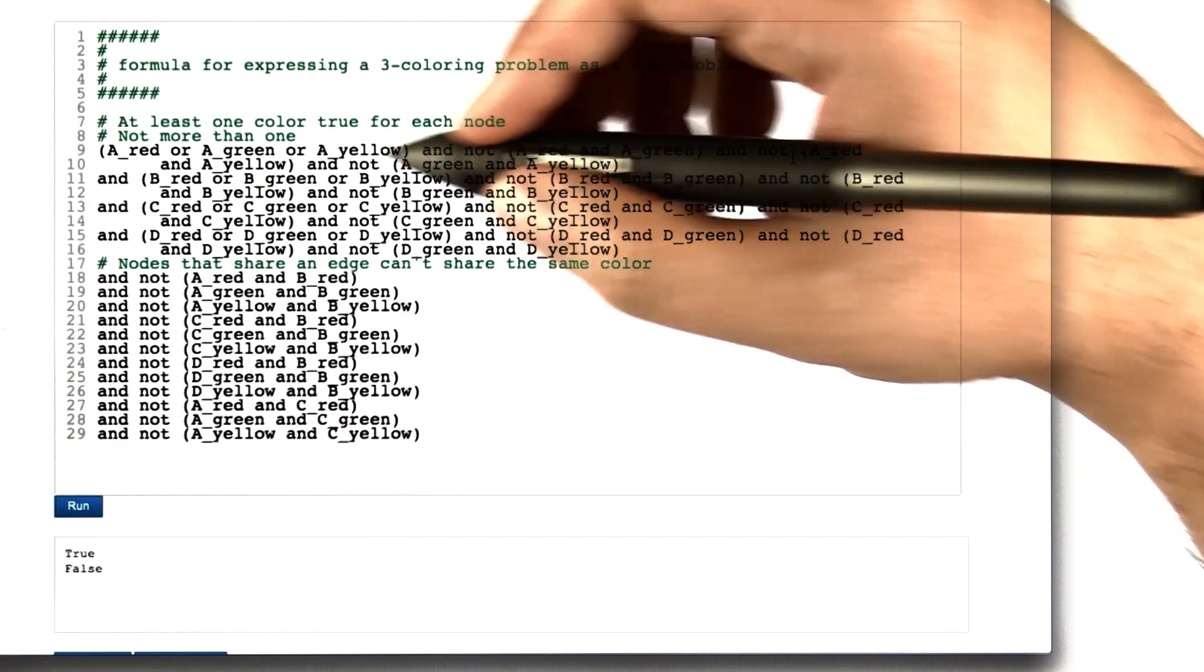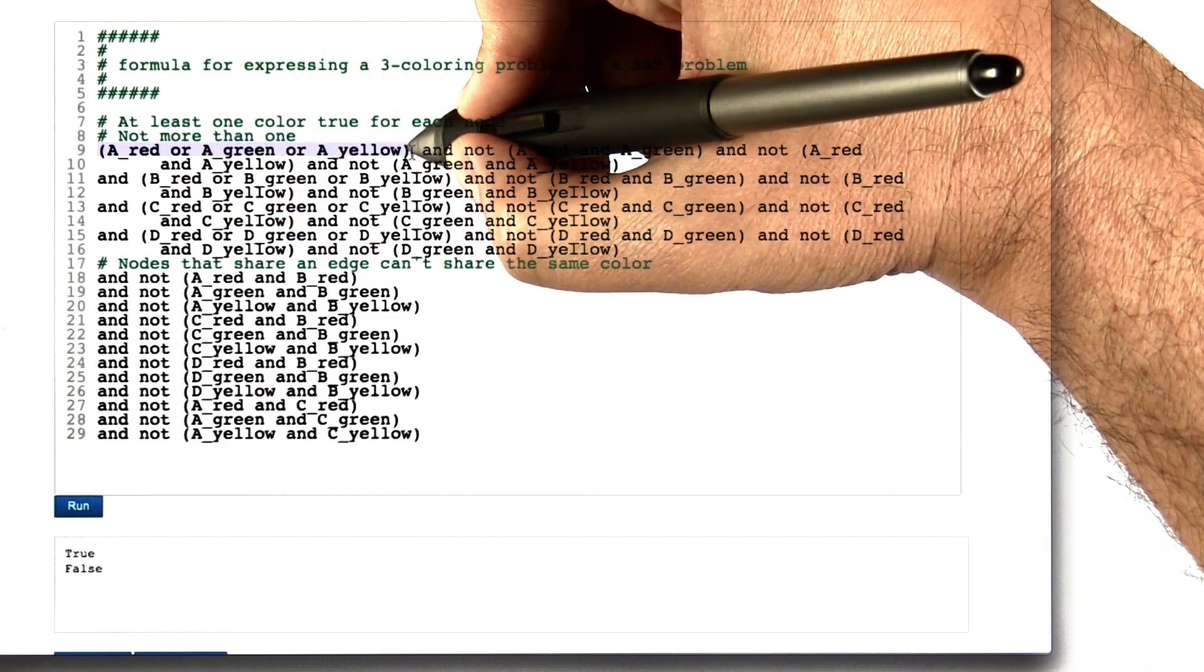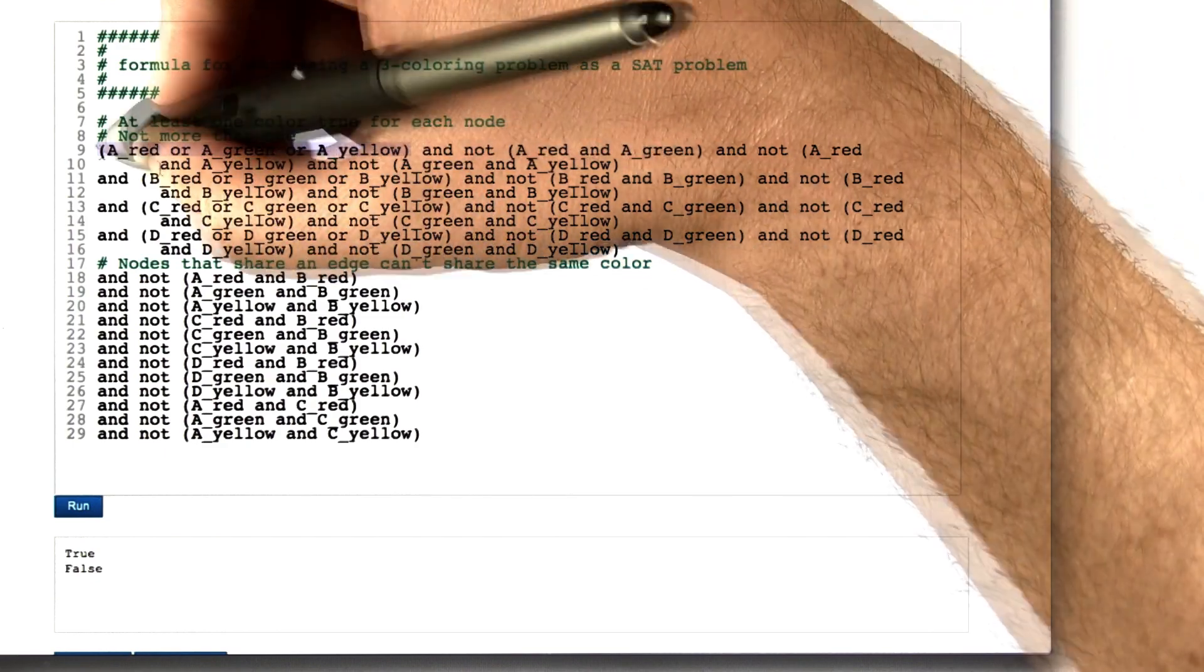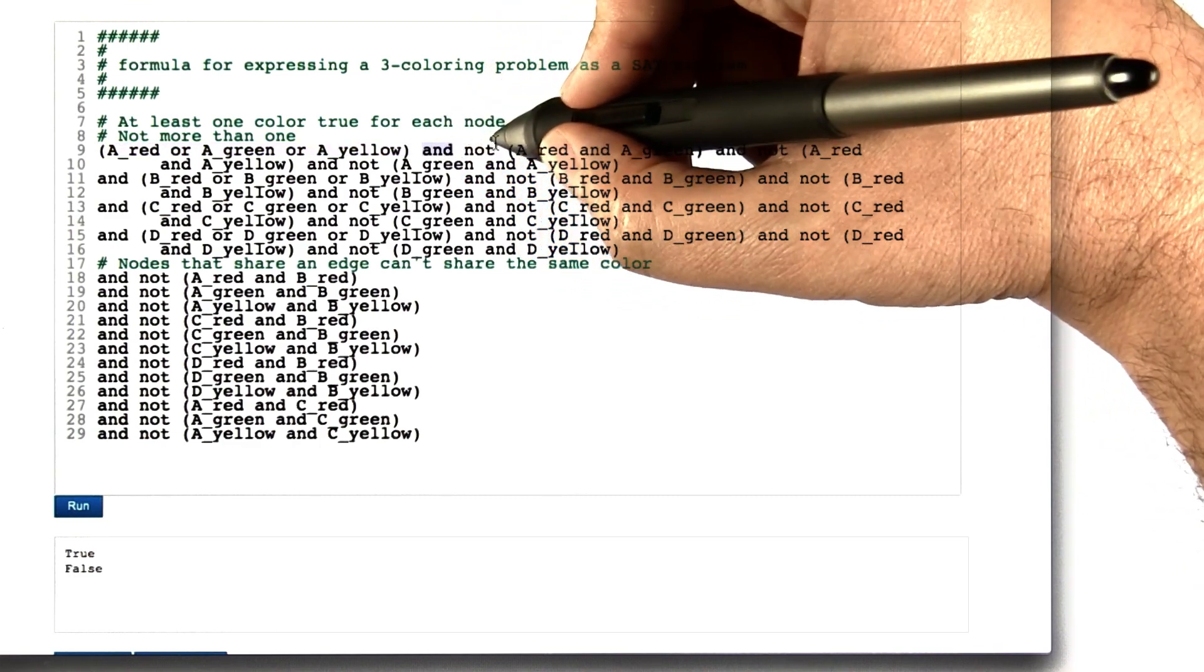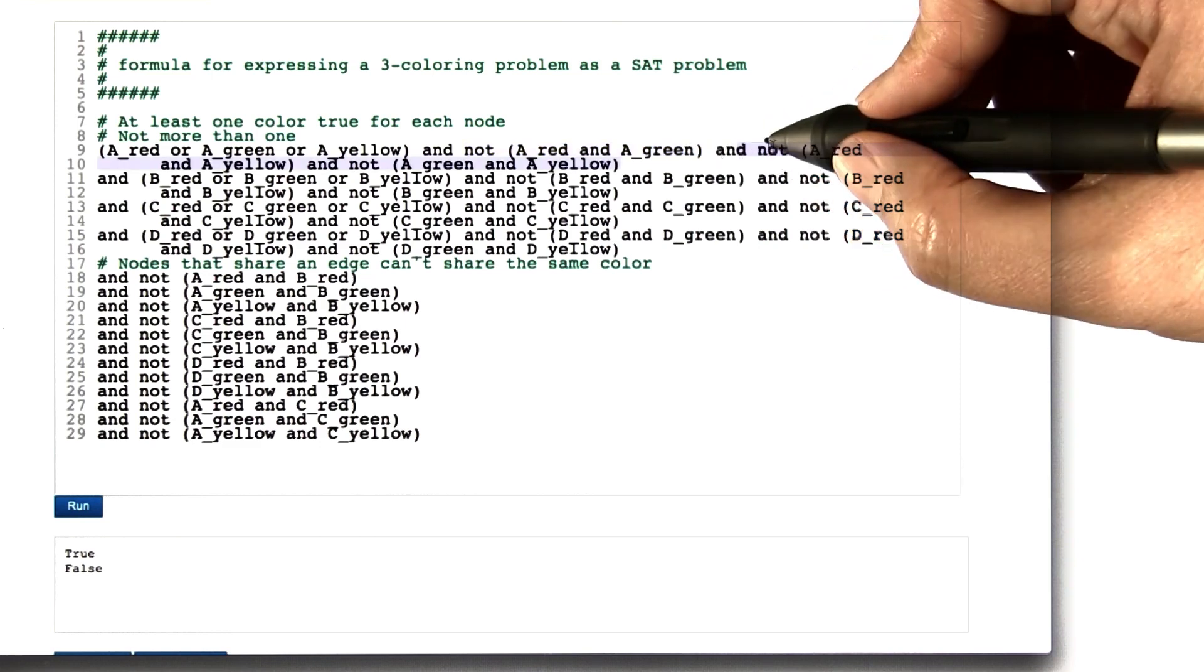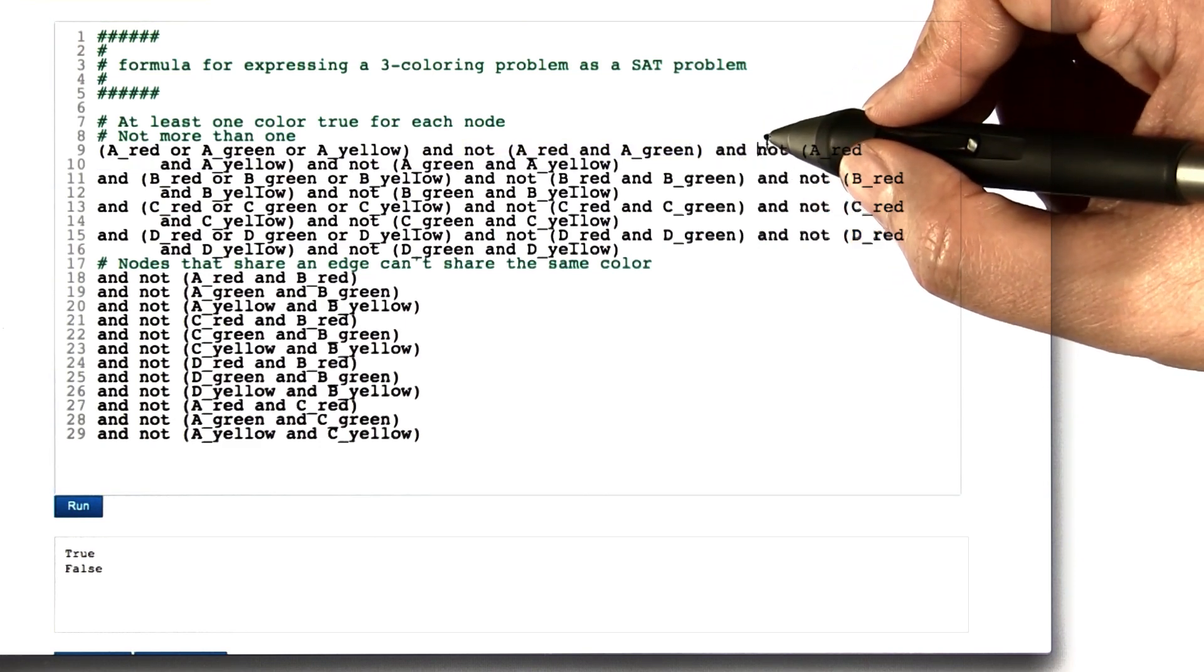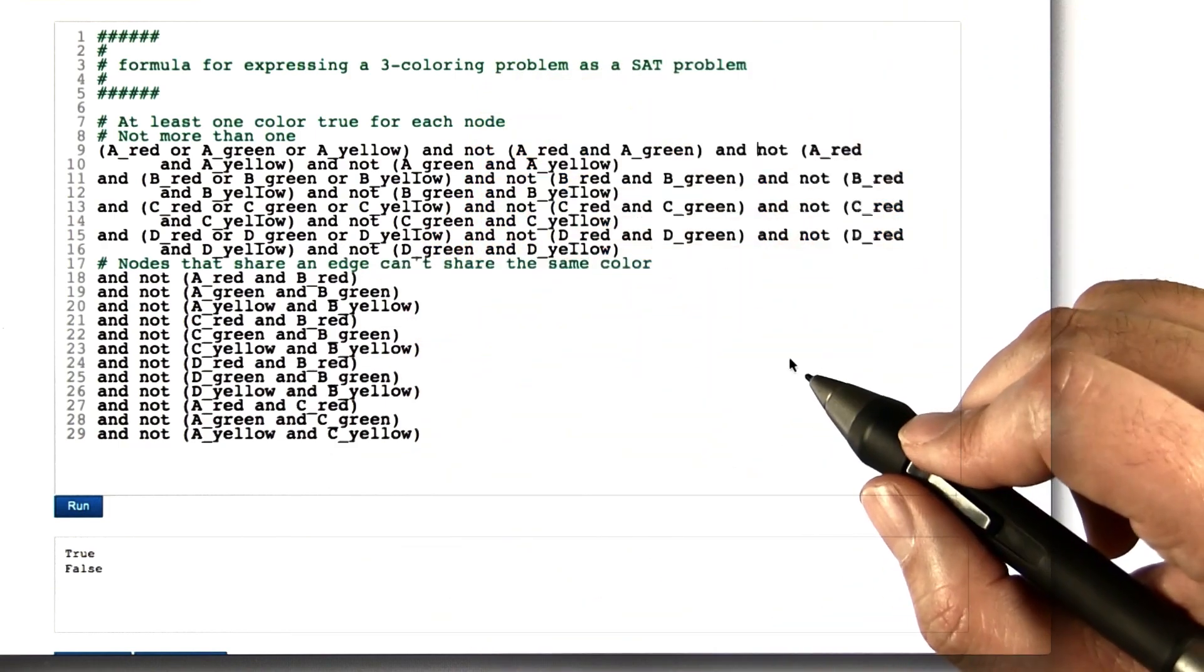Just to make that more concrete, a clause is the sort of thing I've got here in parentheses. It's between the ands. We have a list of things that are combined, then there's an and, then more things that are combined and an and. So how many things are being anded together in the formula?